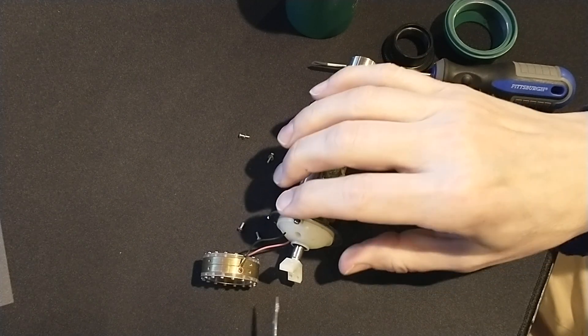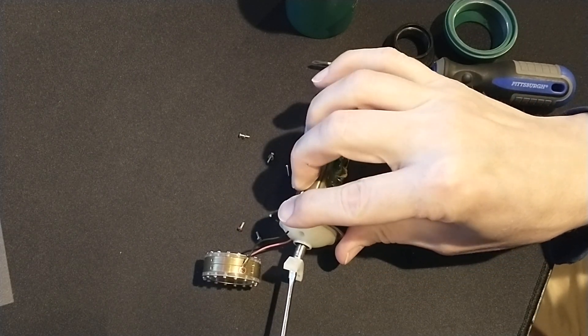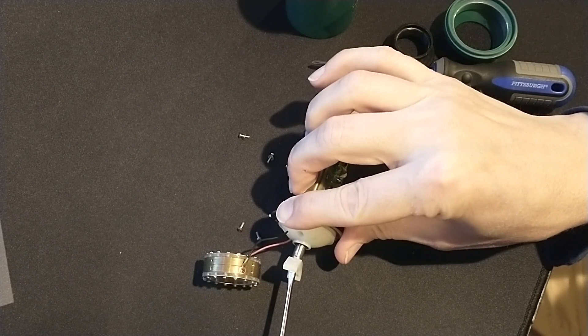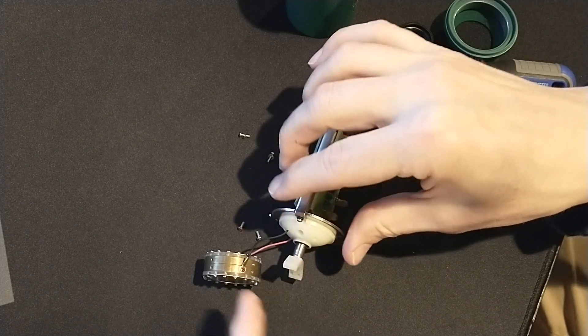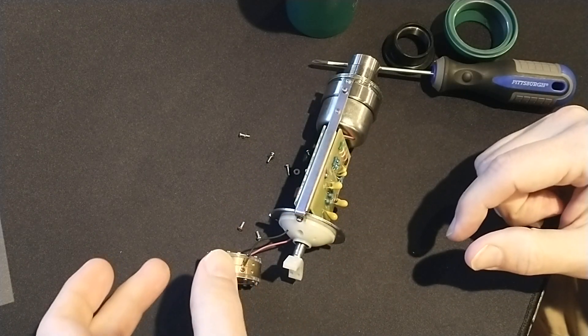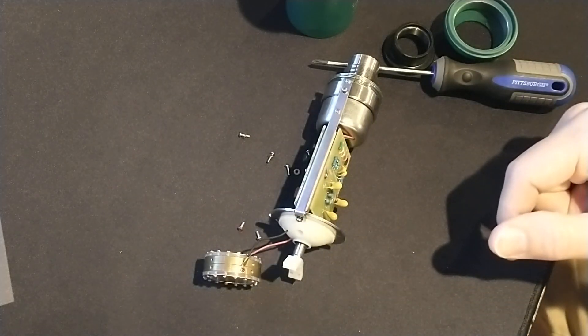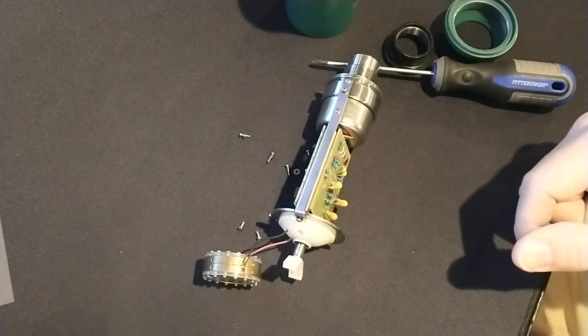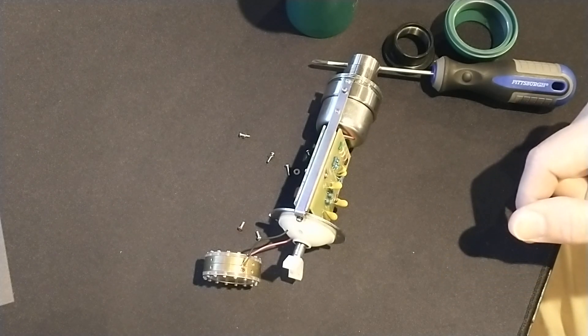So you just take your screwdriver, put it in there, tighten it till it's good and snug. And that should take care of it. Now you just put everything back together again. When you're handling the capsule, be careful not to touch the front or back. Just handle it by the edge and just reassemble everything in the reverse order. And that should fix the problem.